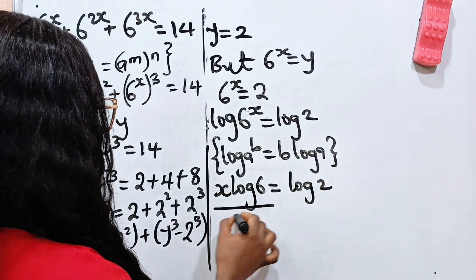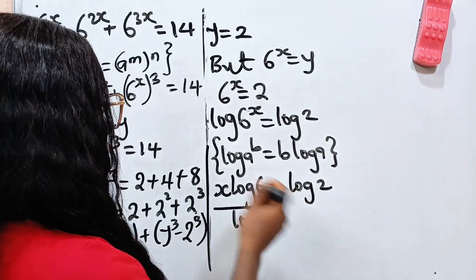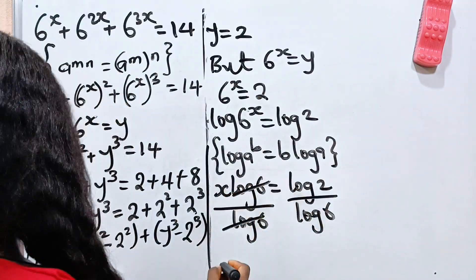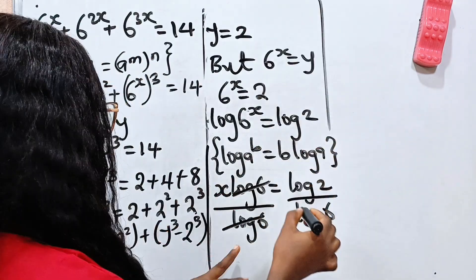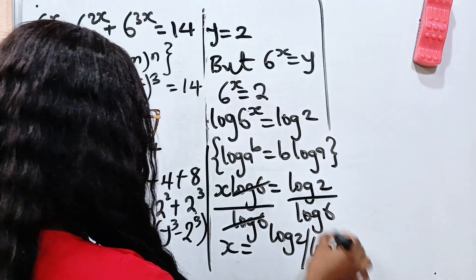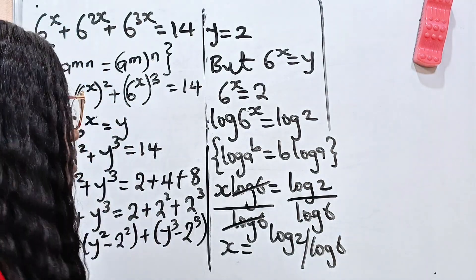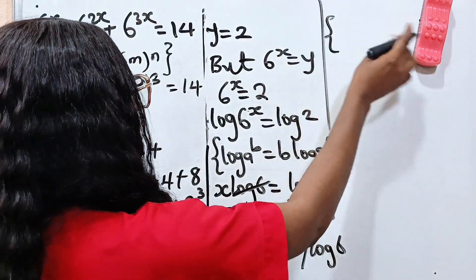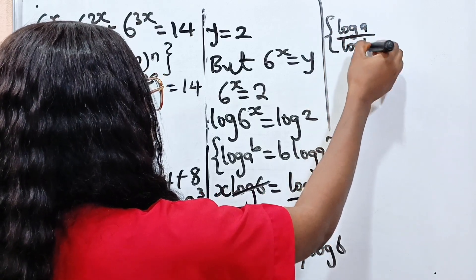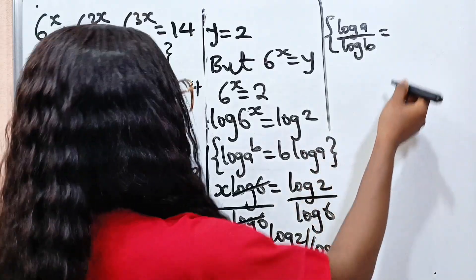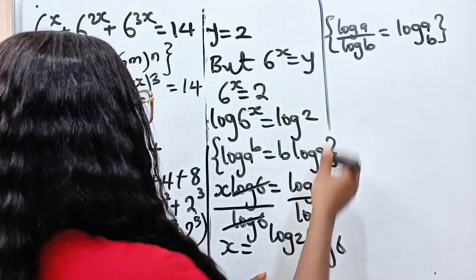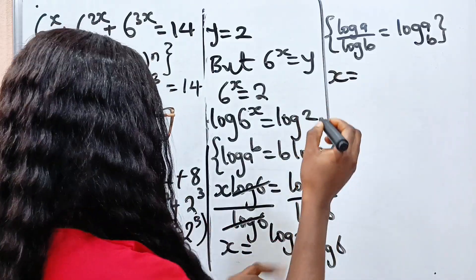To get x, we divide both sides by log 6, giving x equals log 2 divided by log 6. Now remember that log a over log b, using change of base, equals log a base b. Therefore, this can be written as x equals log 2 base 6. Now it's time to prove that the answer we got is correct.